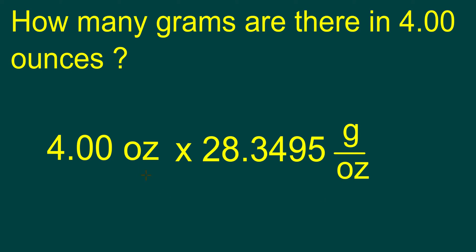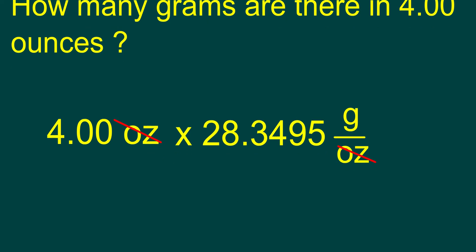As we did in the first example, ounces on the top cancel with ounces on the bottom. We now take our 4 and multiply it by 28.3495. That gives us 113.398, and the units would be grams.